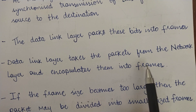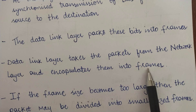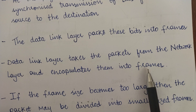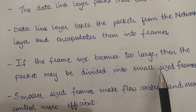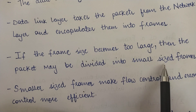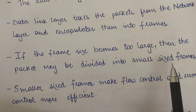The data link layer takes packets from the network layer and encapsulates them into frames. The network layer is the layer above the data link layer, and the units of data at the network layer are known as packets. When these packets are received by the data link layer, they are encapsulated into frames. If the frame size becomes too large, the packet may be divided into smaller frames, and it is always ensured that frames are of normal or smaller size.